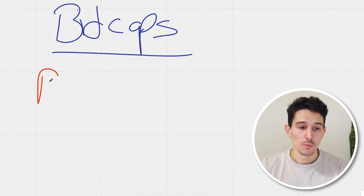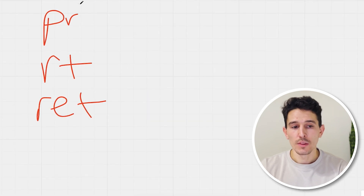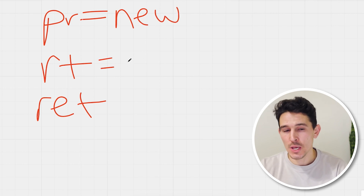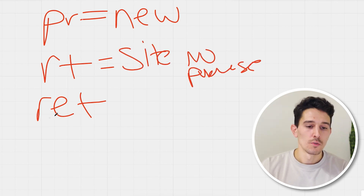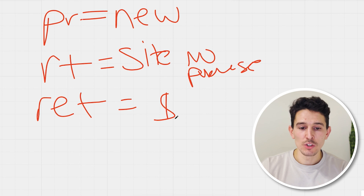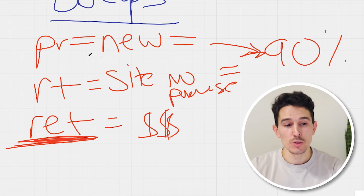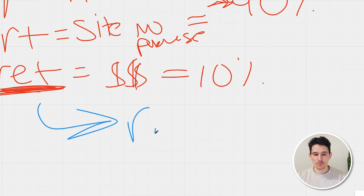The campaign structure: we're going to set a prospecting campaign, a retargeting campaign, and a retention campaign. The prospecting campaign is 100% new customers — they've never been to your website. Retargeting is people who've been to your website but never purchased. Retention equals people who have given you money before. In terms of budget, we generally want 90% in retargeting and prospecting and about 10% in retention.